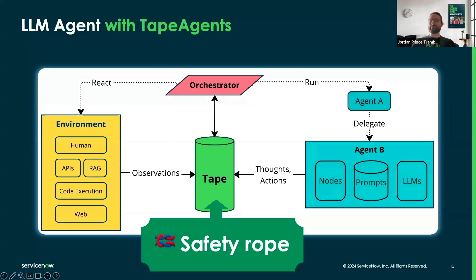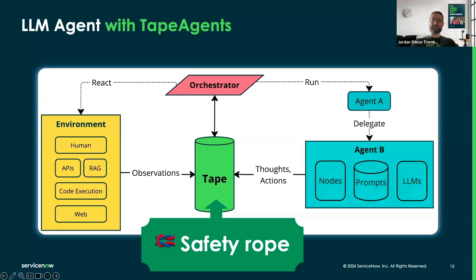The tape comes between the environment and your LLM agents — it acts like a safety rope. The state of the agent is computed from the tape. Agents write thoughts and actions back to the tape. The environment executes actions that are added to the tape and writes back observations. Agents do not talk to the environment directly, and each agent step is written on the tape.